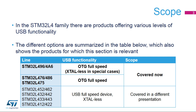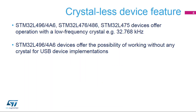This slide explains the range of USB interfaces within the STM32L4 product line. This presentation describes the Full Speed On-The-Go or OTG USB Device Interface supported in STM32L49X4AX and STM32L47X4AX devices. All devices with the FS-OTG USB Device Interface can operate with a low-frequency crystal oscillator. STM32L49X4AX devices also allow a USB device to be implemented without a crystal oscillator.